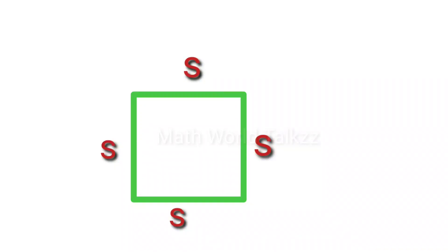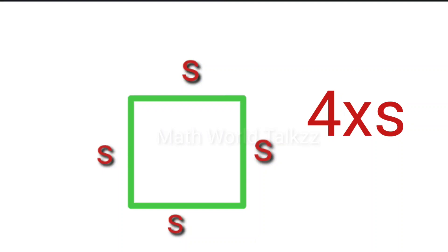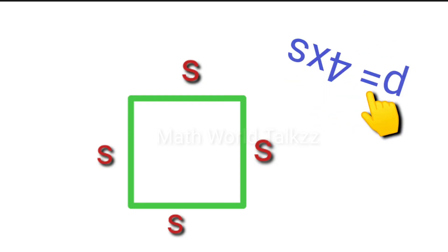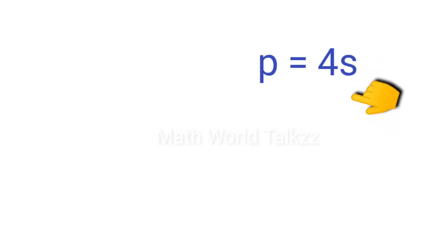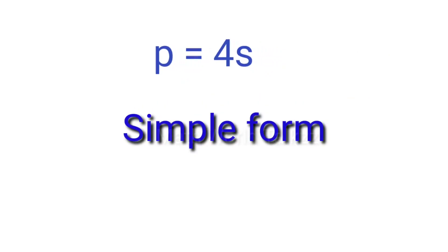The perimeter of a square is found by multiplying its side by 4. That means perimeter is equal to 4 into s. Let p denote the perimeter of the square, then we can write p is equal to 4 into s. When writing relations with letters and numbers, we don't write the multiplication symbol, so we simply write p is equal to 4s.